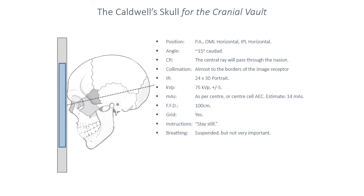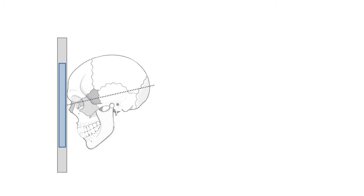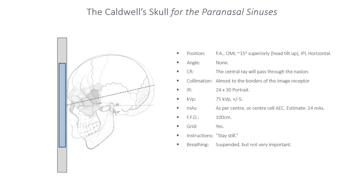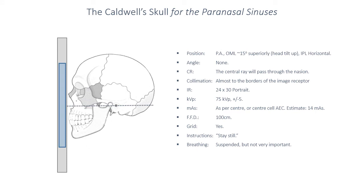We'll start off by considering the standard Caldwell's projection of the skull. We have the patient in a PA position with their nose and forehead against the image receptor and a 15 degree caudal angulation. This is a good position for showing the frontal sinuses and frontal bone. However, we won't be able to show fluid levels well with this technique, so we need to modify it for the sinuses. When we undertake a Caldwell's projection for the paranasal sinuses, the tube angulation is reduced from 15 degrees to zero angulation.